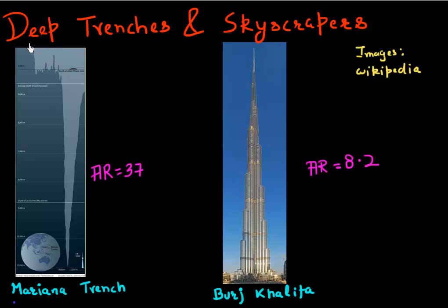Picking up where we left in the last video. In the last video, I talked about deep trenches. We saw the Mariana Trench, which is the deepest trench in the world, has an aspect ratio of 37.